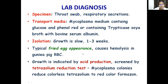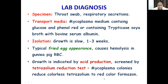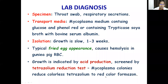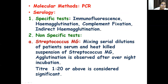Growth is indicated by acid production in the medium. Growth is confirmed by the tetrazolium reduction test, in which Mycoplasma colonies reduce colorless tetrazolium to red-colored formazan — an important exam question. For molecular methods, PCR is available. Specific serological tests include immunofluorescence, hemagglutination, complement fixation, and indirect hemagglutination.